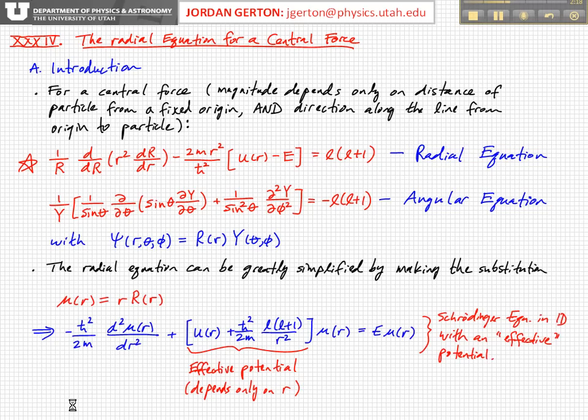Now we can simplify this radial part by making a substitution. We can call mu of r the product of the radial position r times the function big R. When we do that, it can be shown that the radial equation simplifies to this form.